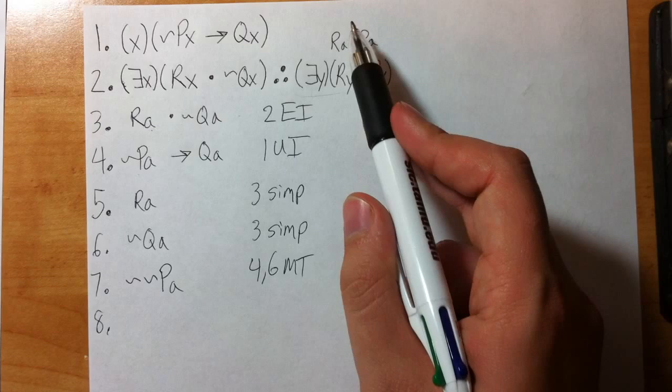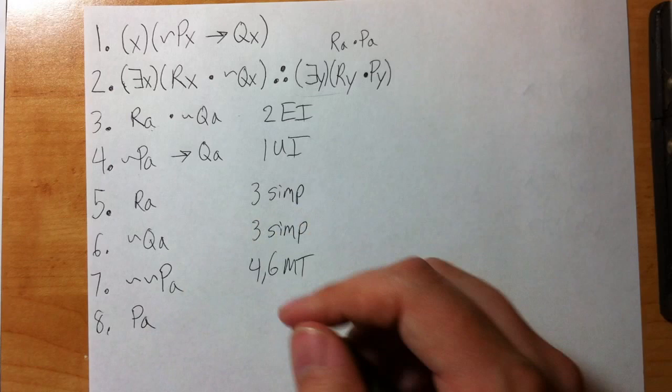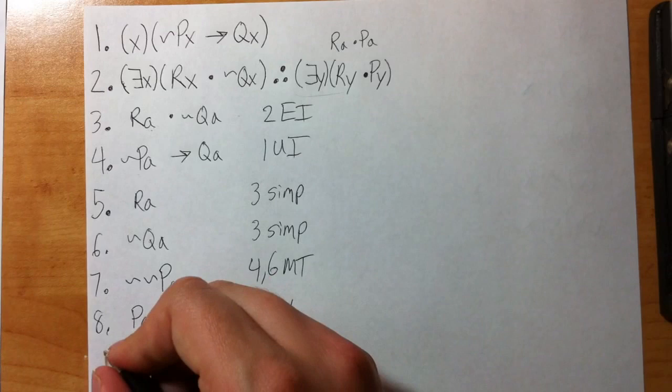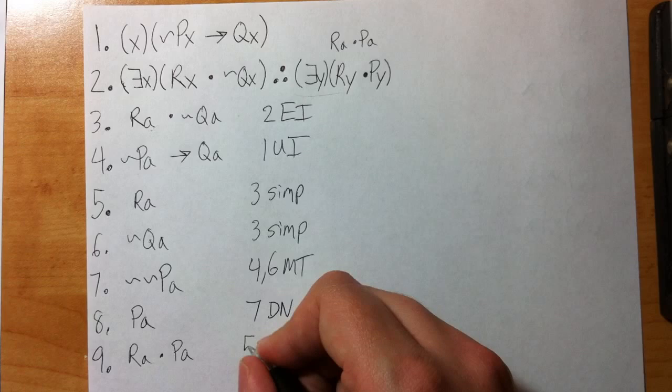Hmm. Well, I'm getting really close to this—I've got Ra, but I've got tilde tilde Pa. What rule lets me get rid of those tildes? Don't forget about your equivalency rules. They're not going to come up very often, but when they do, you're really going to need them. So don't forget about your equivalency rules: DN, DeMorgan's, all that stuff is still fair game.